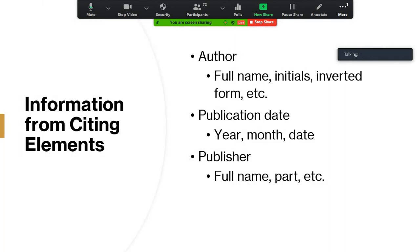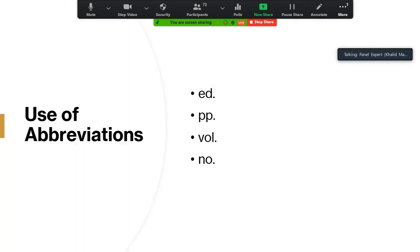Another decision is about the format of information taken from citing elements. For example, for the author: whether to use a full name or initials, or inverted form. For publication date: whether only the year is sufficient or whether month and date are also required. For the publisher: sometimes the full name is needed, sometimes only part of the name.